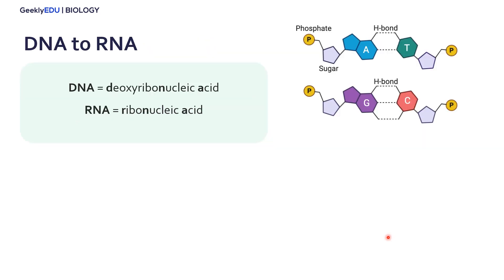Starting with the first part of our central dogma is where we get DNA turned into RNA. DNA stands for deoxyribonucleic acid, and RNA stands for ribonucleic acid. Here we see our four different nucleic acids in DNA: we have A, T, G, and C, and they are bound together in that double helix in the DNA.